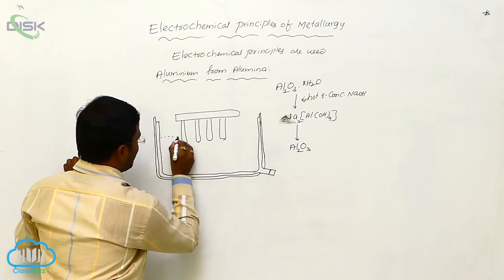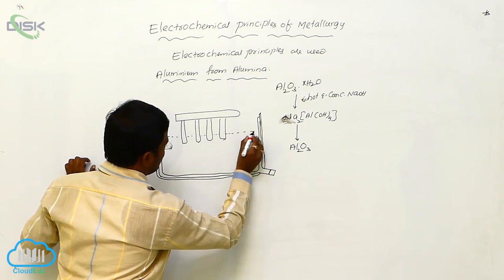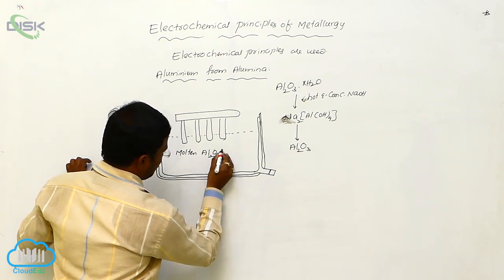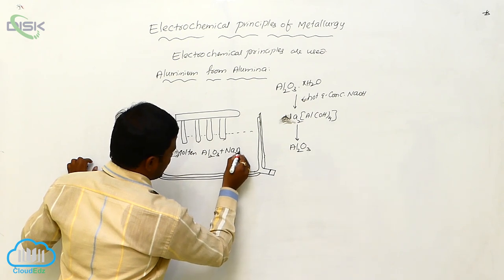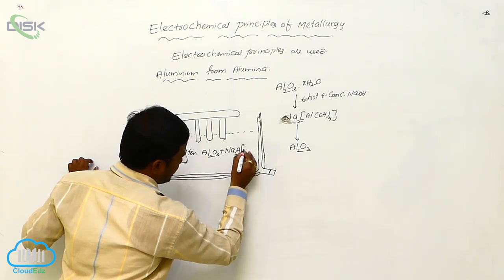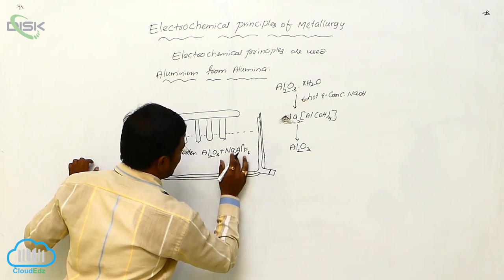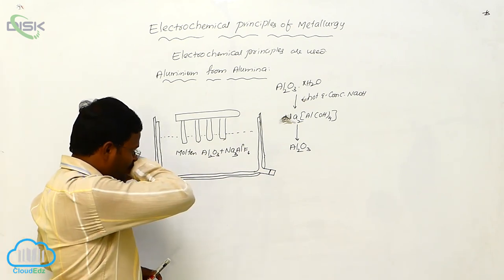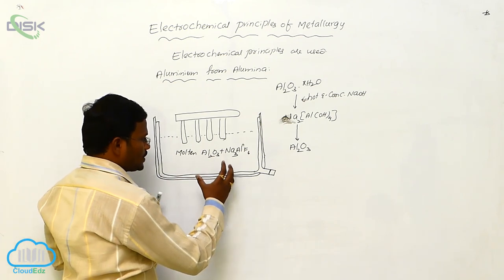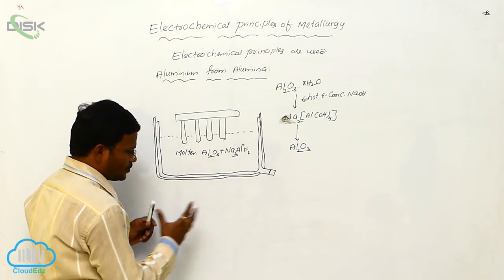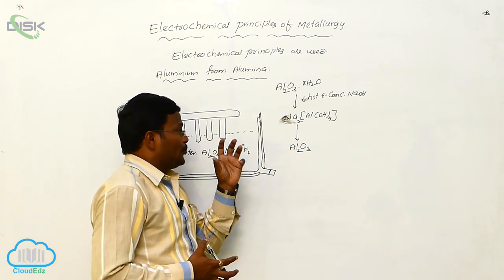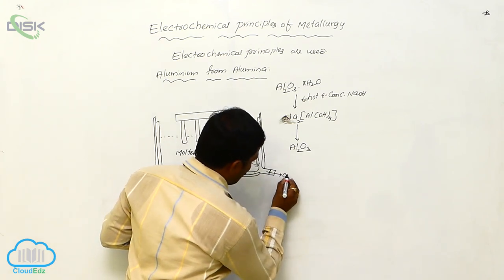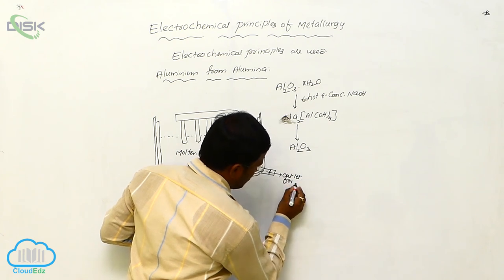These graphite electrodes are dipped in molten Al₂O₃ plus Na₃AlF₆ — sorry, Na₃AlF₆. It is a type of cryolite. The molten Al₂O₃ and Na₃AlF₆ when mixed together, due to electrochemical principles, the pure aluminum will be separated at the outlet for aluminum.